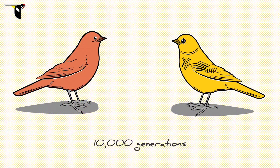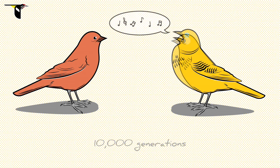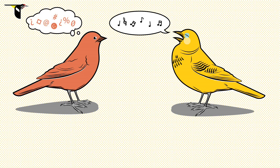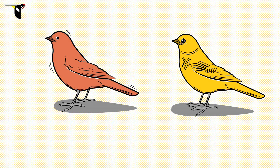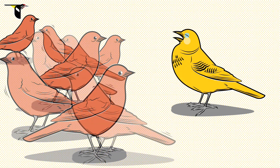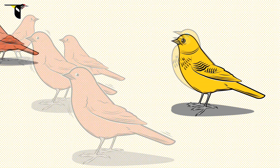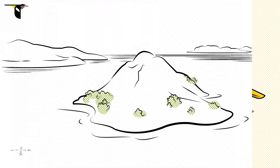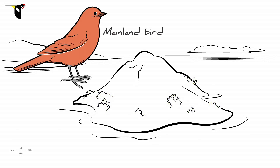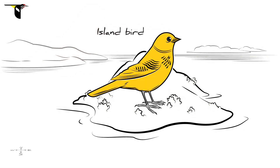What if we fast-forward again to 10,000 generations of isolation? This time, the female doesn't even recognize the male's song and is completely uninterested. If this female's mating preferences are widespread in the population, we now have two bonafide species: mainland and island.